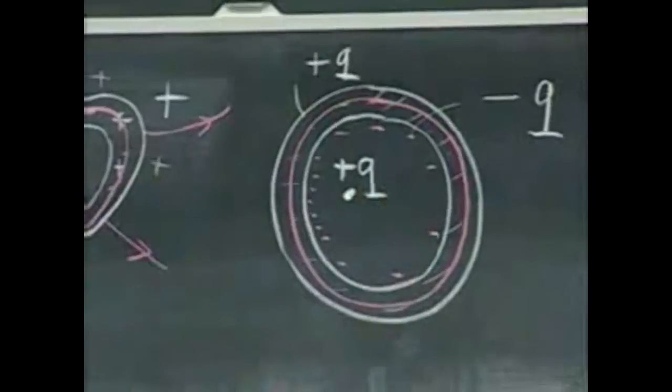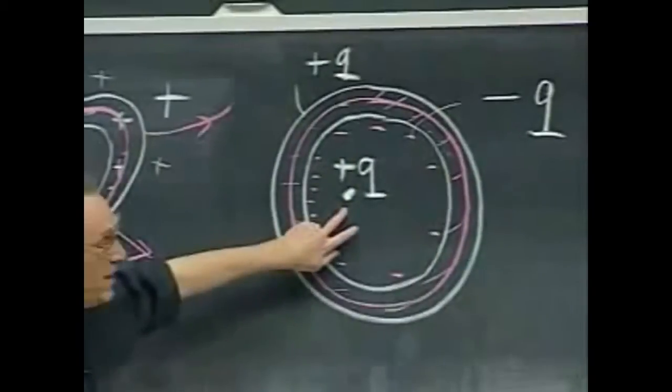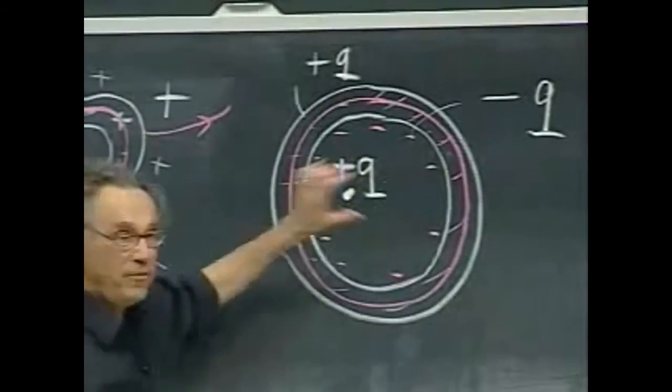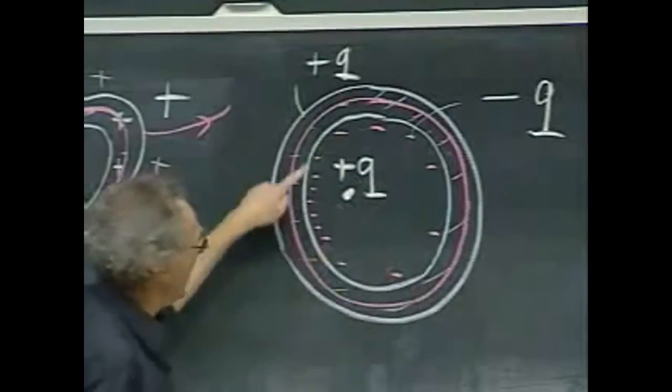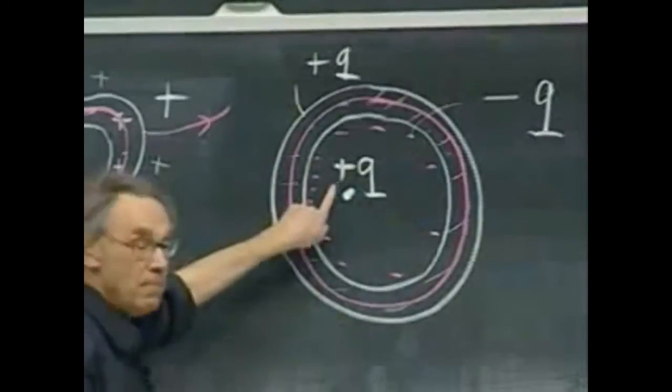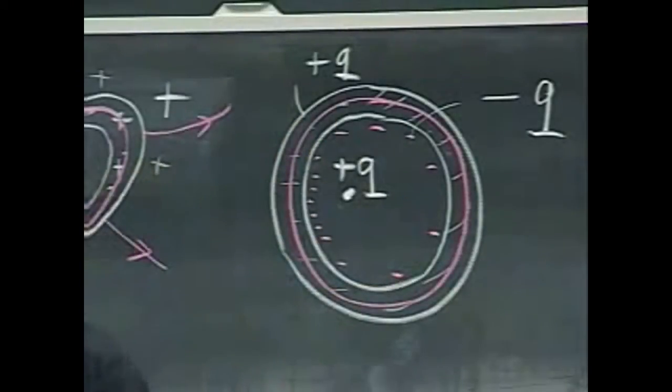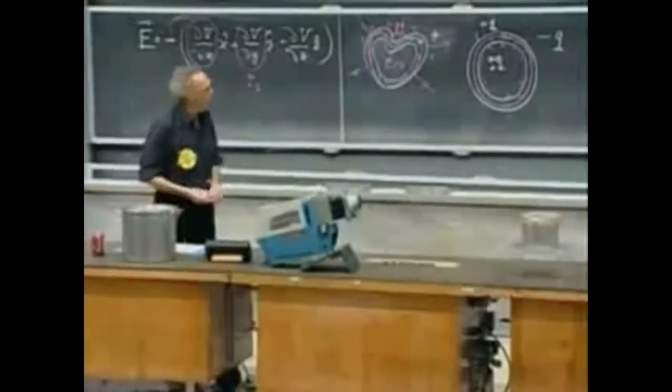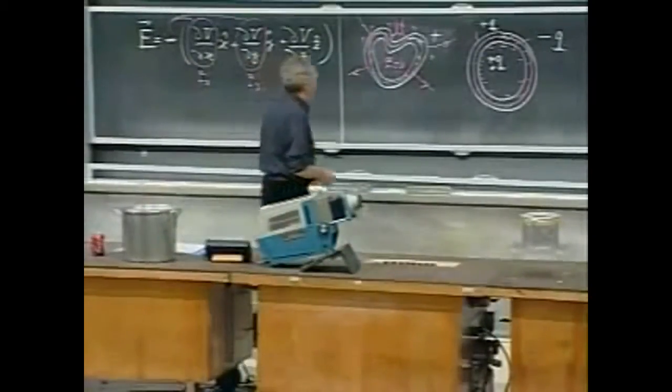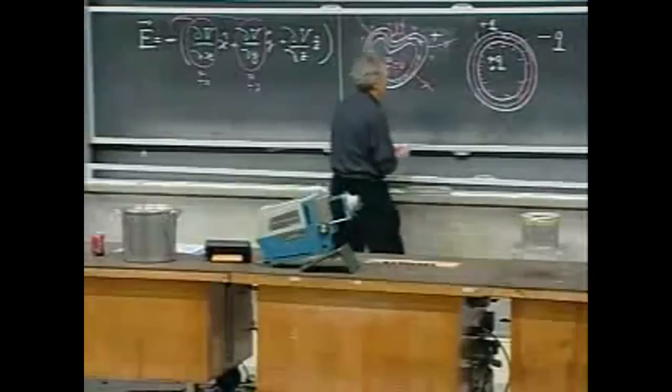So now you get a peculiar situation: the plus Q charge inside creates an E field, which creates negative charge on the inside, the same in magnitude, opposite in sign, and plus Q on the outside. And the electric fields, they are very complicated. Let me try to put them in.